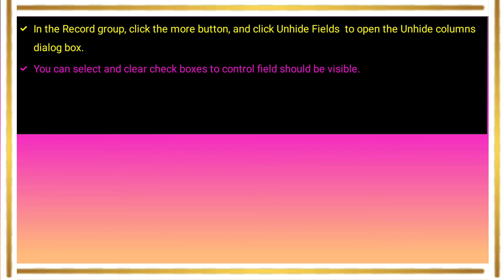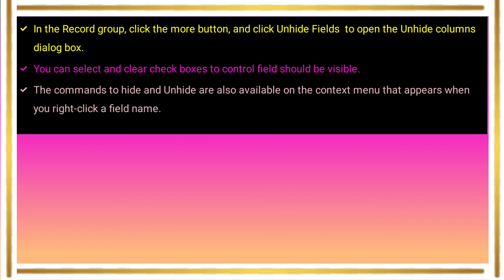In the dialog box, tick the option to make a particular field visible — the field will become visible automatically. You can select and clear check boxes to control which fields should be visible. The Unhide Column dialog box is also available from the context menu that appears when you right-click a field name, where hide and unhide options are directly available.